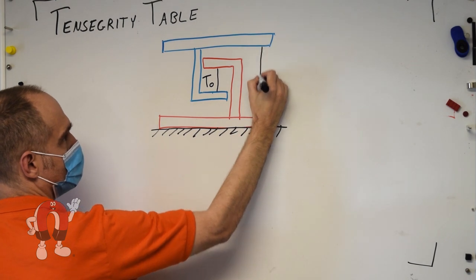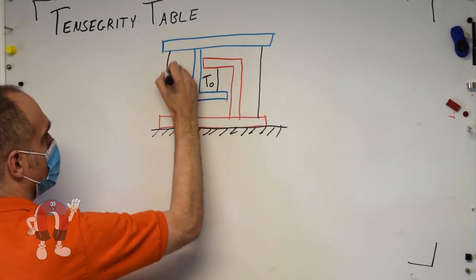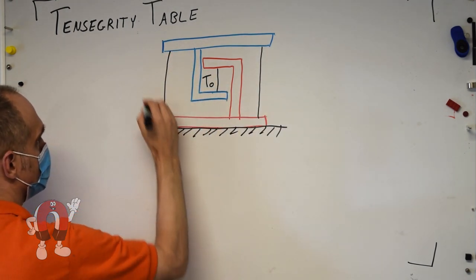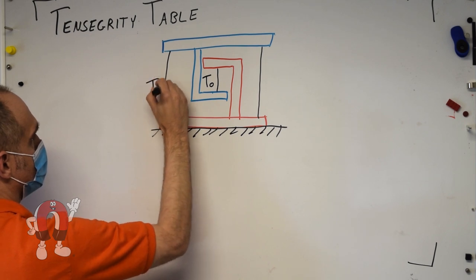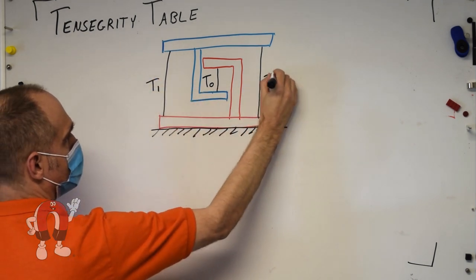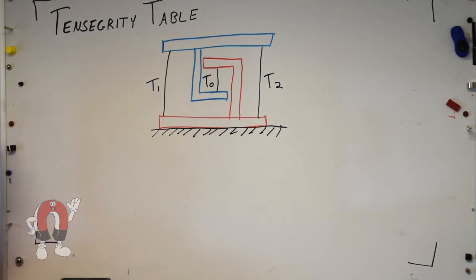You can imagine that the tighter we try and pull this string together, the more it drives the blue tabletop upward. To prevent it from flying away, we'll tie similar strings out at the sides. These strings have tension in them as well.